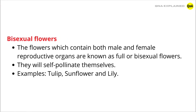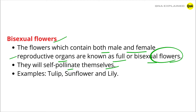Now, bisexual flowers. The flowers which contain both male and female reproductive organs are known as full or bisexual flowers. They will self-pollinate themselves. Examples: tulip, sunflower, and lily.